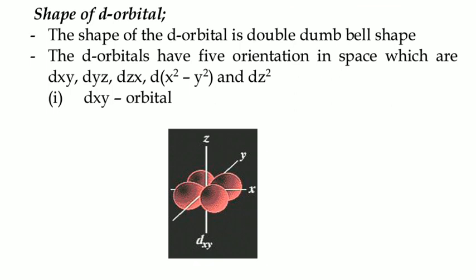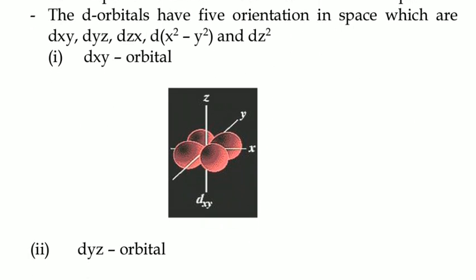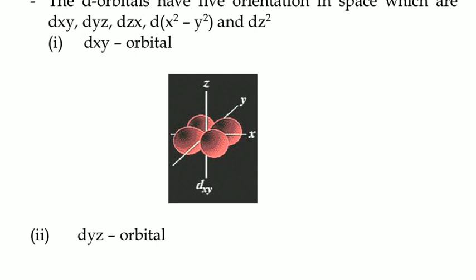The D-orbital have five orientations in space which are dxy, dyz, dzx, dx² minus y², and dz². dxy orbital appear like this.